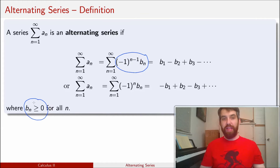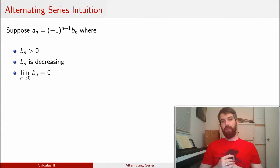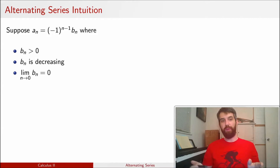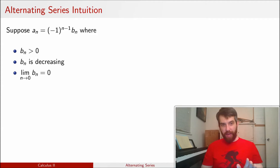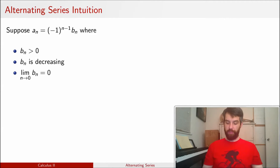So the question is: if we have these alternating series, what properties do we get? If I demand not just any alternating series going between positives and negatives, but one where the b_n's are both decreasing and have limit 0, then I get the following property.